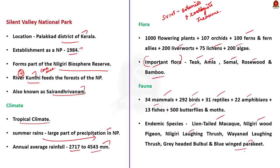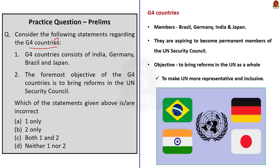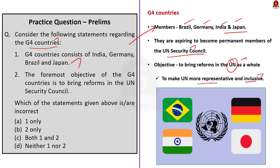Some important endemic species of Silent Valley include lion-tailed macaque, Nilgiri wood pigeon, Nilgiri laughing thrush, Wayanad laughing thrush, grey-headed bulbul, and blue-winged parakeet. Now the next question is about G4 countries. G4 countries consist of Brazil, Germany, Japan, and India. The G4 countries aspire to become permanent members of the UN Security Council, with the main objective of bringing reforms to the United Nations to make it more representative and inclusive. Statement 1 — G4 countries consist of India, Germany, Brazil, and Japan — correct. Statement 2 — objective of G4 is to bring reforms in the UN Security Council — correct. Since the question asks for incorrect statements and both are correct, the answer is option D, neither one nor two.